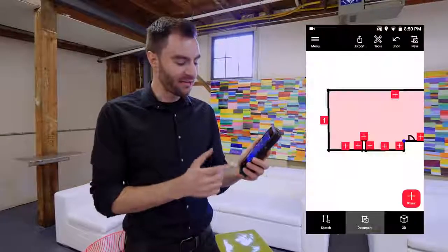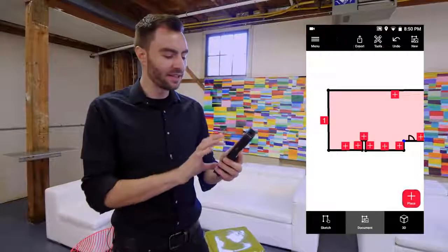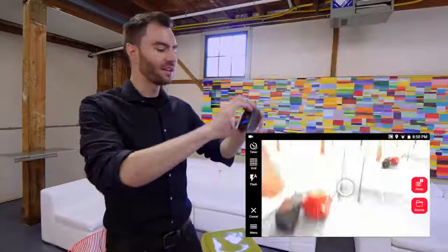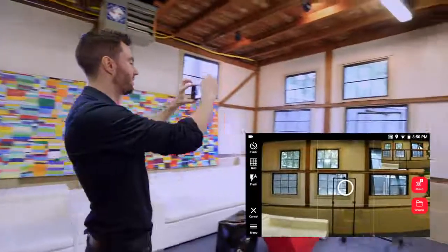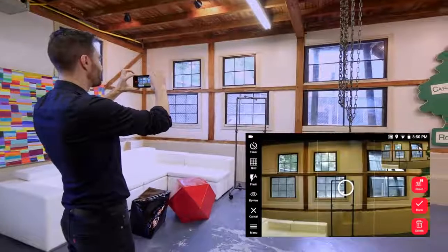So you also see at the bottom we have this documentation tab. This is where I can place a stereo image at any point in the 2D floor plan. So if I click on this, I can now either take a new stereo image or choose from some previous ones that I've already taken.